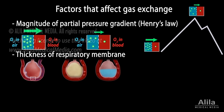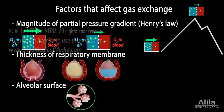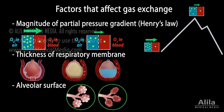The amount of gas exchange is directly proportional to the contact surface between the blood and the alveolar air. Diseases that affect alveolar surface, such as emphysema, reduce gas exchange efficiency and produce low blood oxygen levels.